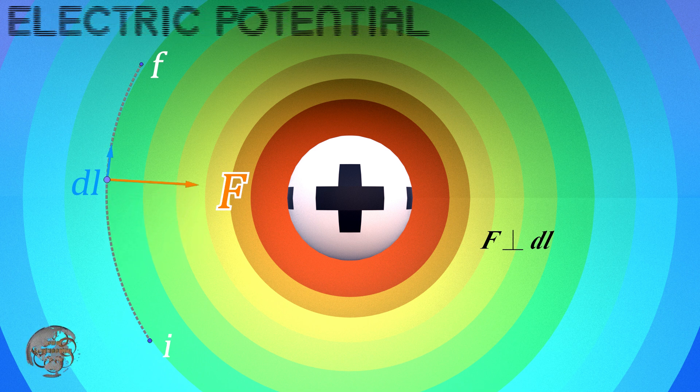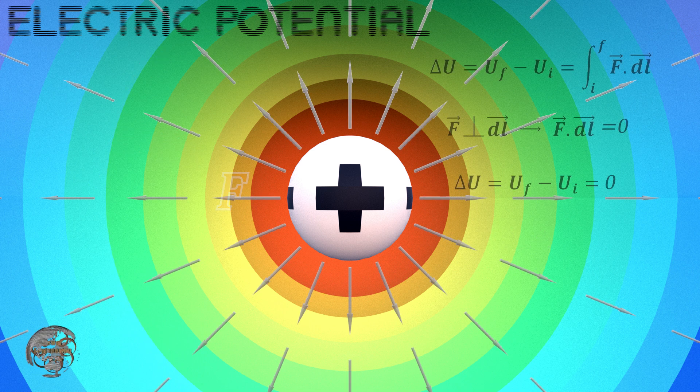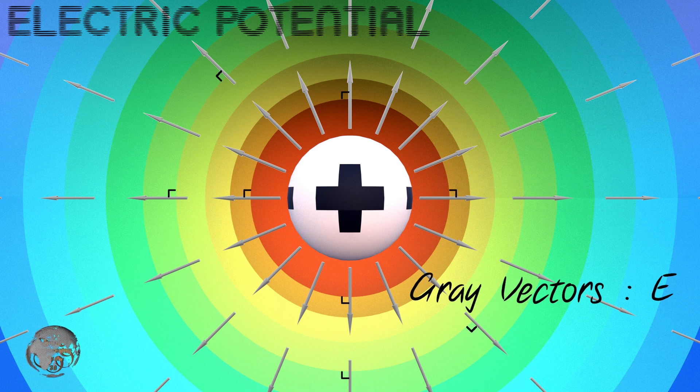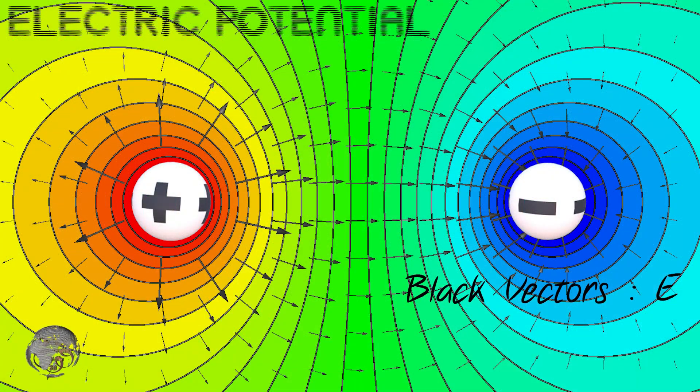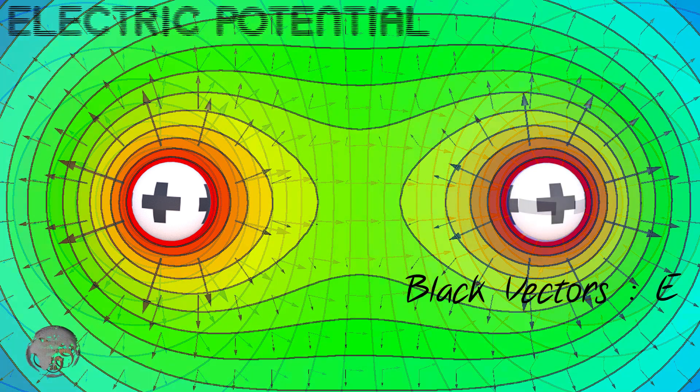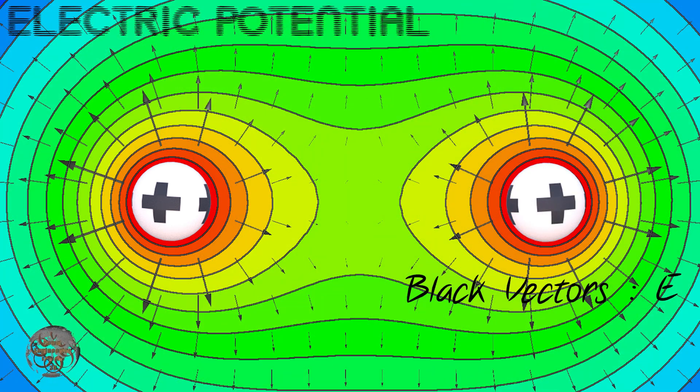So, moving along equipotential surfaces doesn't change the charge's potential energy. We can also conclude that the electric field is always perpendicular to equipotential surfaces. When two unlike charges are placed near each other, the resulting equipotential surfaces appear as shown on the screen. This principle also applies when two like charges are placed near each other.